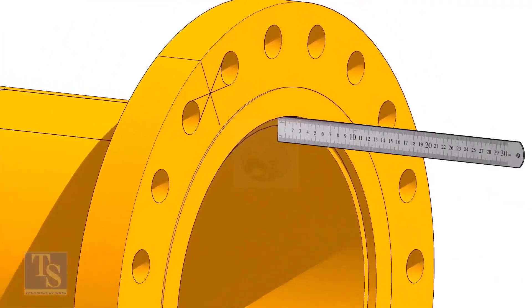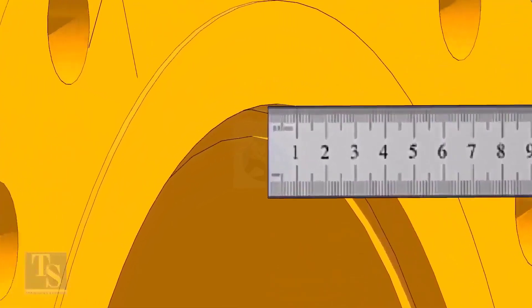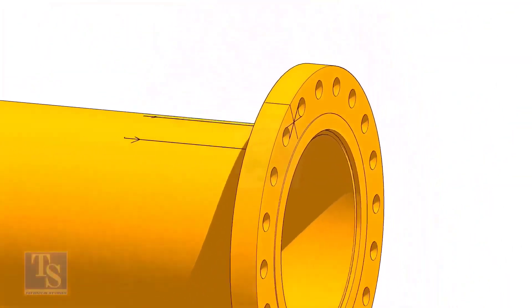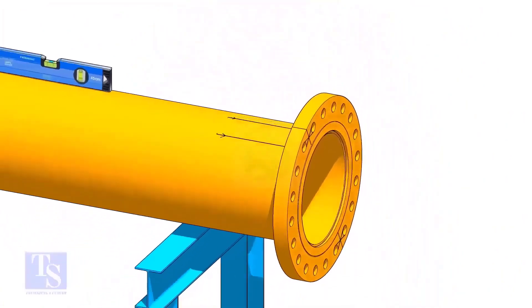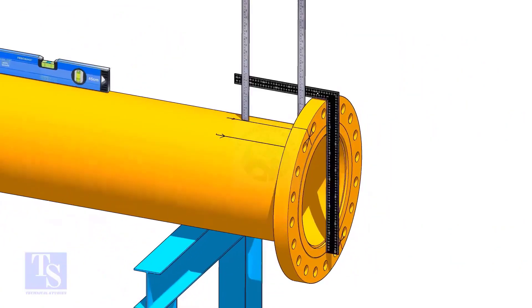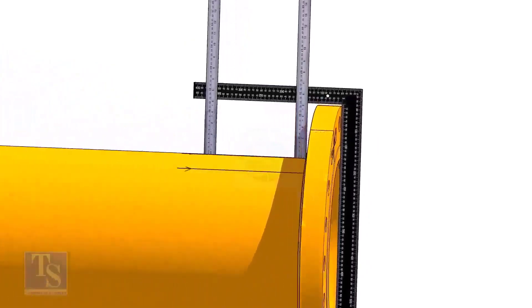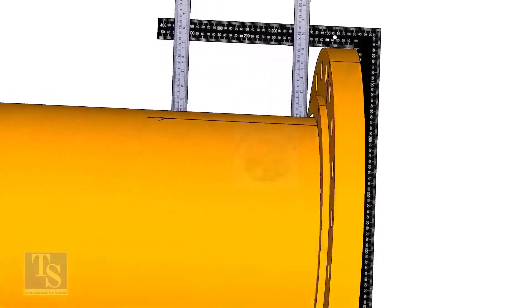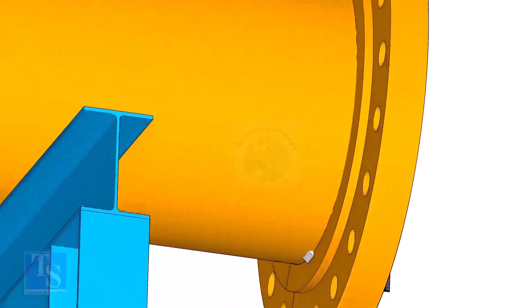Fix the distance between the flange face and the pipe face, usually this measurement is equal to the thickness of the pipe. Tack weld on the top of the pipe with the flange and check the squareness. If correct, tack weld at the bottom side also.